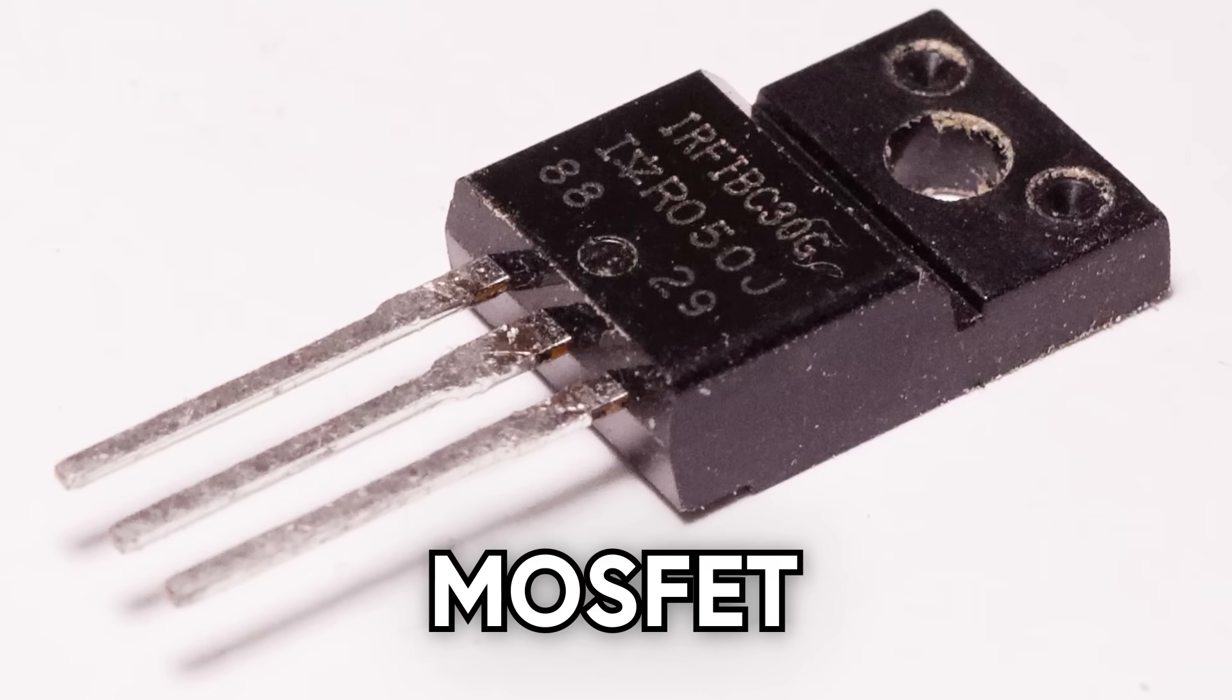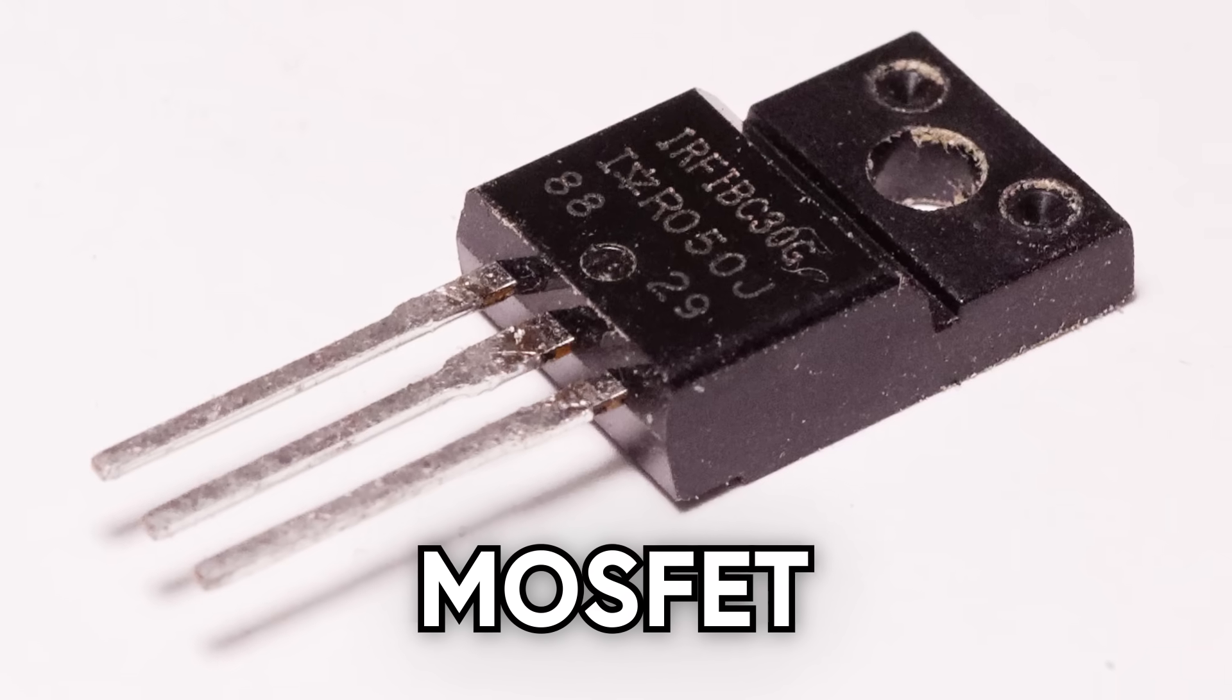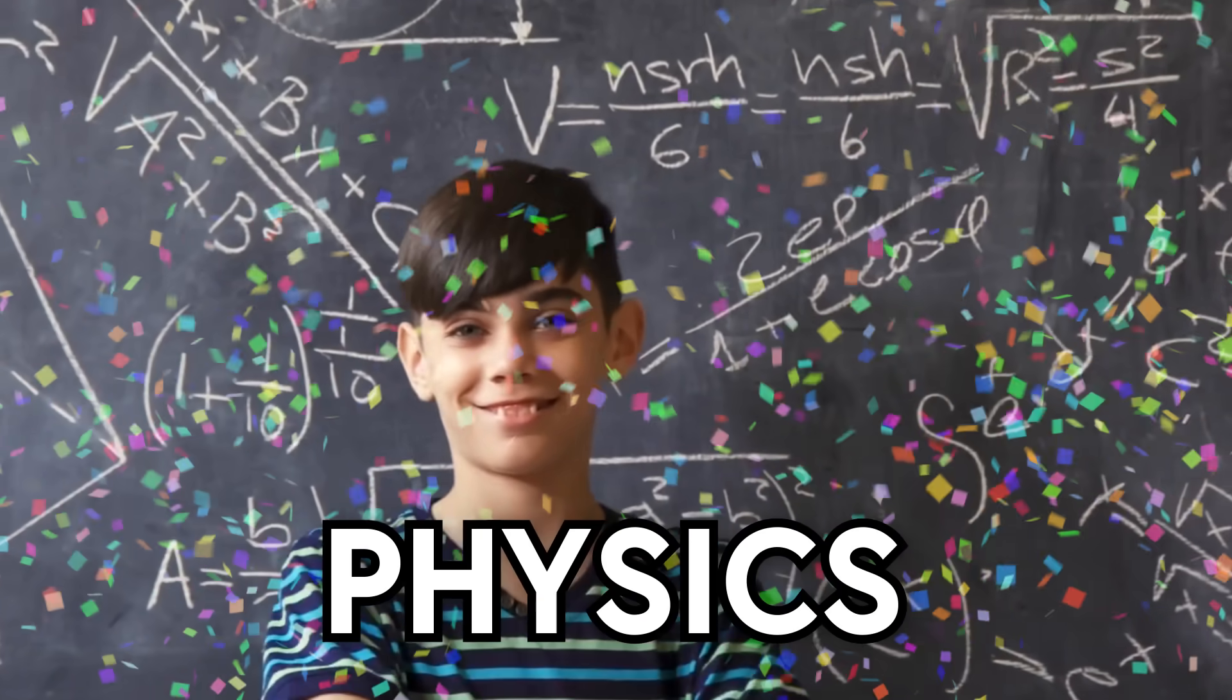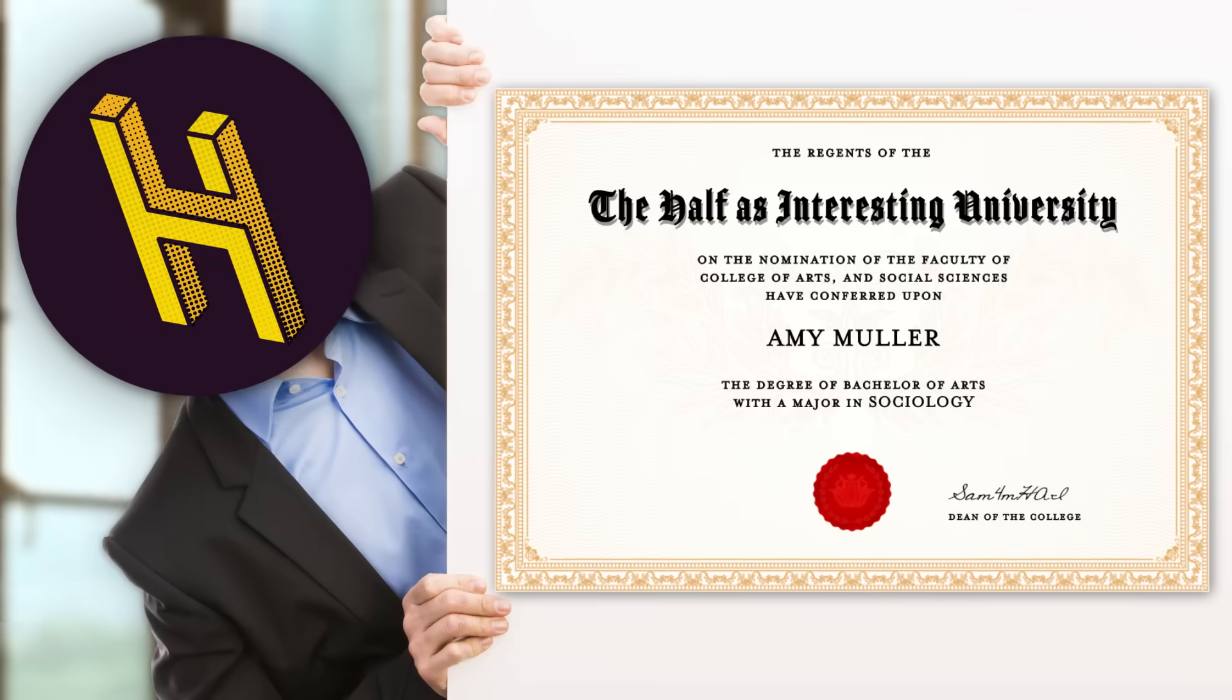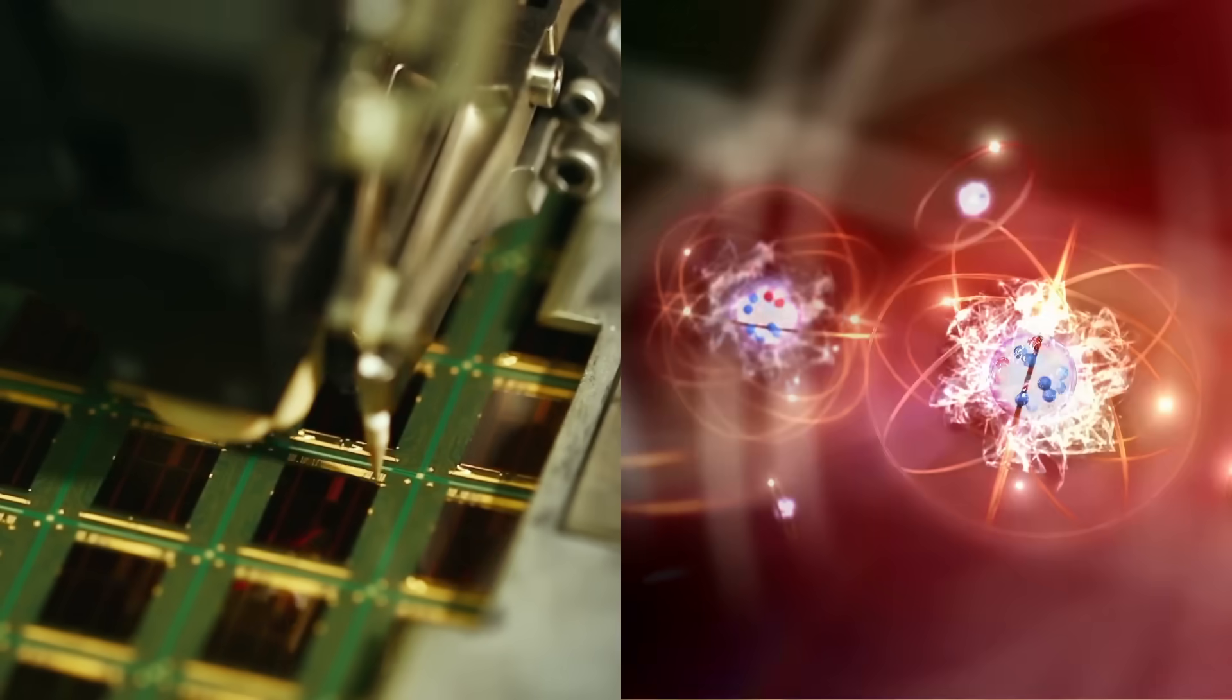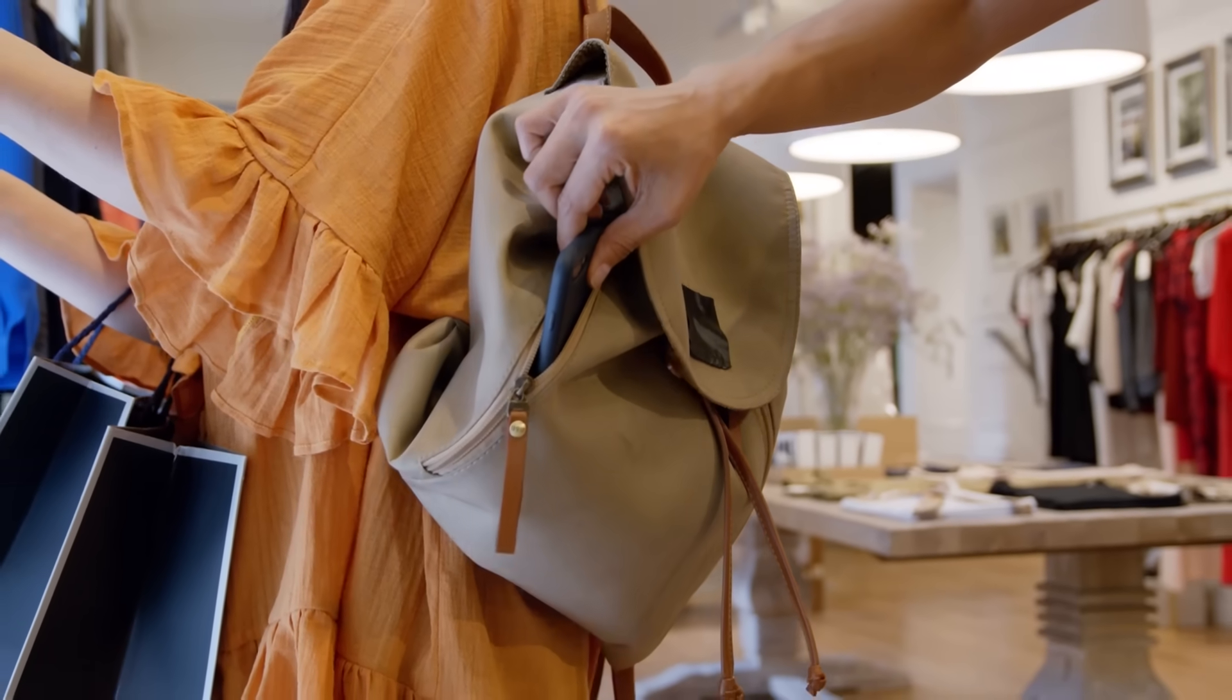MOSFET transistors, now the single most manufactured human-made object in history, literally cannot get any smaller because... physics. To understand why, I gave Amy, a sociology major, a couple days to get up to speed on the cutting edge of semiconductor engineering and quantum mechanics. Then I stole her phone so she wouldn't call the NLRB again. Here's what she wrote.